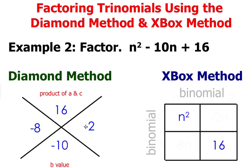Go ahead now and take your two factors and write them in the remaining two boxes. We're going to have a negative 8n here and a negative 2n there.